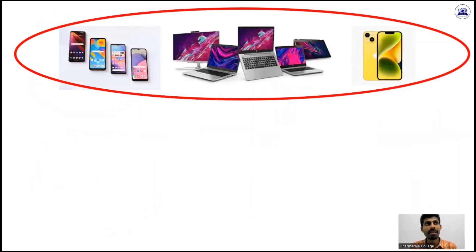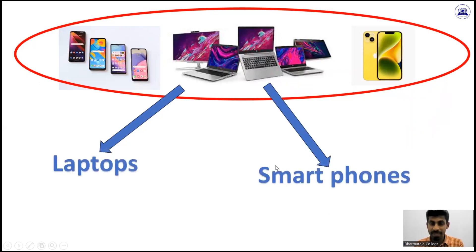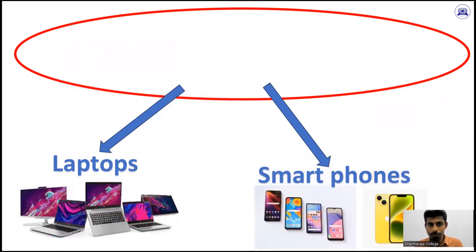In this example I will show you some electronic devices. Basically there are two types of electronic devices. We can categorize them into two categories: laptops and smartphones. Laptop is the first group, smartphone is the second group.